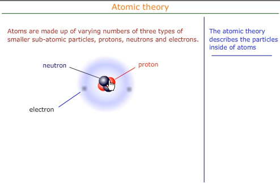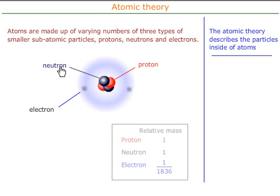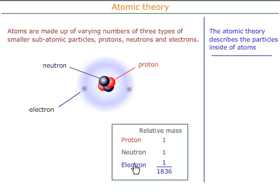If we have a look at the particles, you'll see the neutrons and the protons have a relative mass of one unit. Electrons have a much, much, much smaller mass. The electrons are found around the outside of the atom.